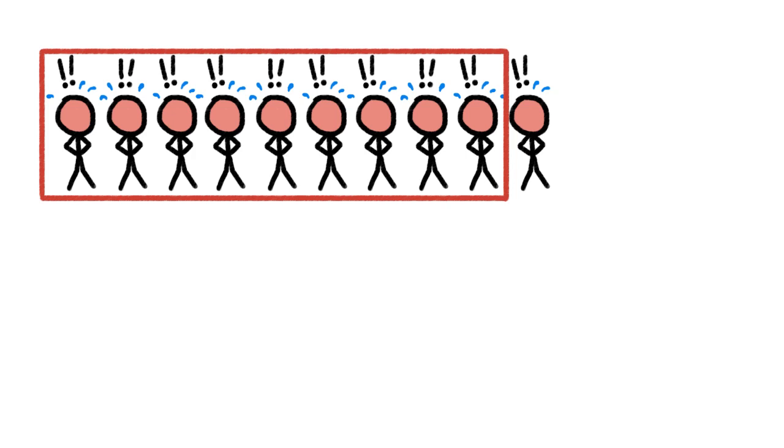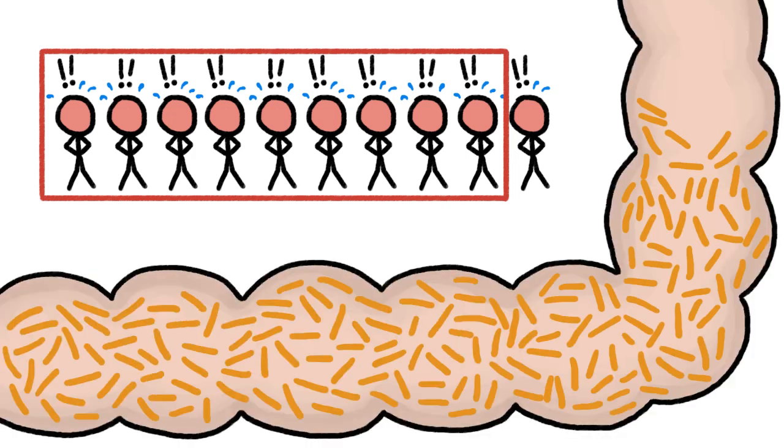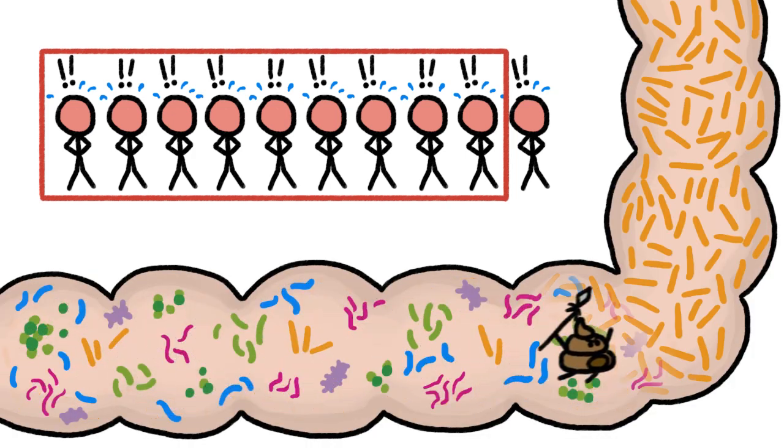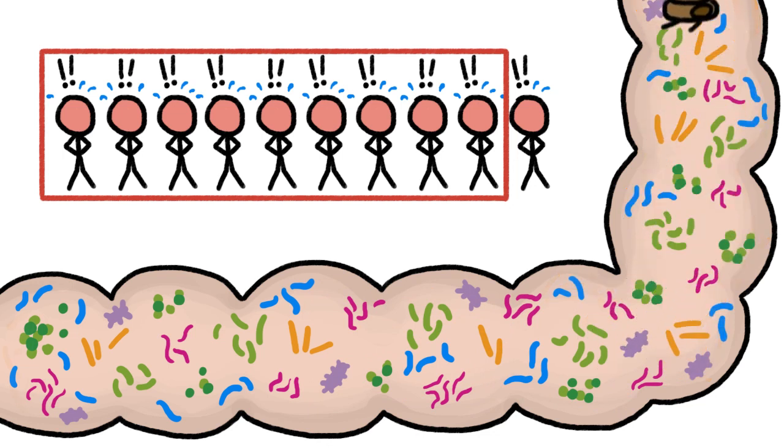And in about 400 of 470 documented cases, the transplanted bacterial community quickly became dominant, causing the patient's digestive system to recover and stabilize, though scientists still don't know exactly how that happens.